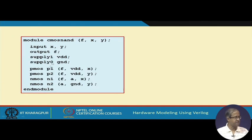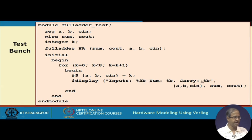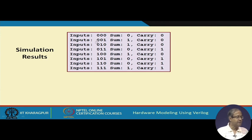A test bench instantiates the full adder with 3 inputs A, B, Cin. A for loop generates all 8 combinations and prints A, B, Cin as a 3-bit number along with sum and carry. For example, adding 0, 1, 1 gives sum 0 and carry 1; adding 1, 1, 1 gives sum 1 and carry 1; and 0, 0, 1 gives sum 1 and carry 0. The simulation gives correct results.